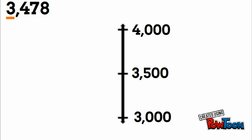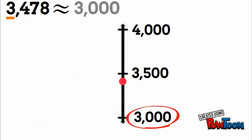We're going to say the midpoint is three thousand five hundred, so we put a dot where three thousand four hundred seventy-eight is. Four hundred is just below five hundred, so the dot goes below the midpoint. Because it's below the midpoint, we round down — three thousand four hundred seventy-eight is approximately three thousand.